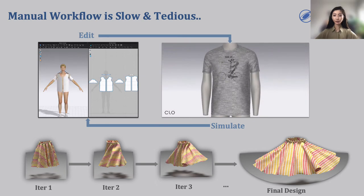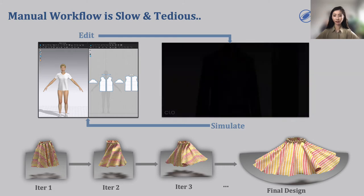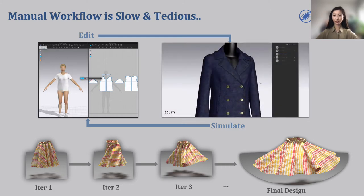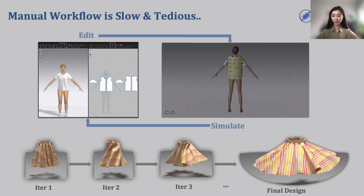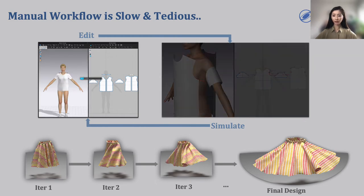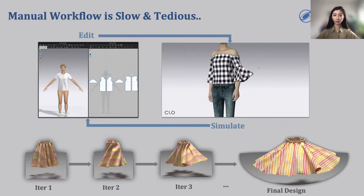There are two issues with this workflow. First of all, simulating cloth is challenging because it has large degrees of freedom and frequent contact and collision events. As a result, accurate simulation comes at the cost of long simulation time. Second, iterative manual editing is tedious. It would be great to have a computational workflow to assist the process.